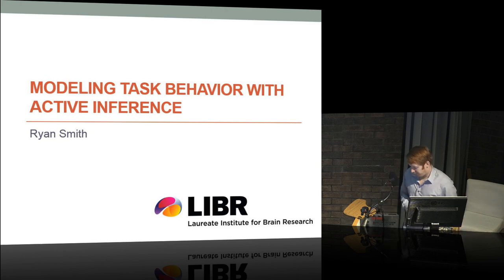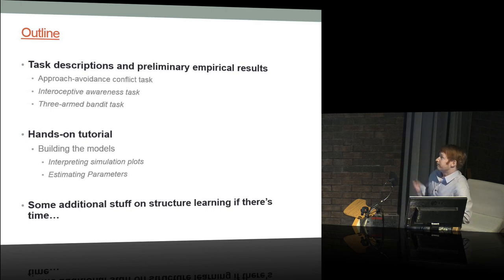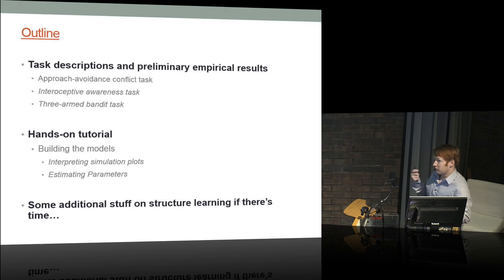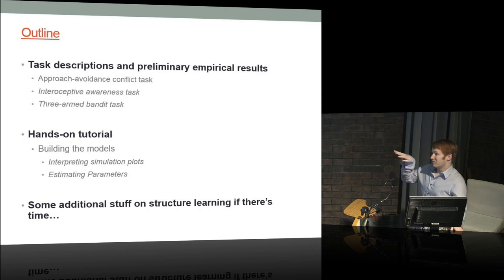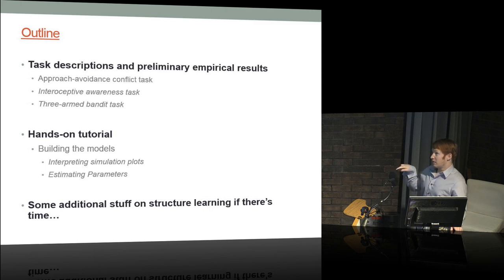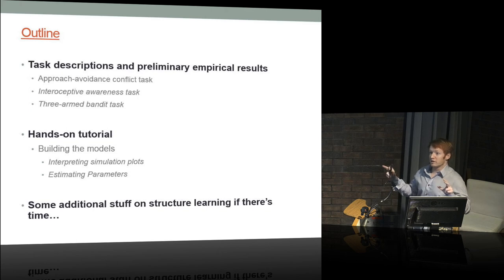The general outline: I'll give you some task descriptions and preliminary empirical results from fitting models to behavior from people who have done these tasks — healthy populations and a bunch of different clinical populations. There are three tasks. There's an approach-avoidance conflict task, which is the one I'll spend most time building the model in detail, and the hope is that'll give you a thorough sense so the next tasks we can go through more briefly, and you can see how the general abstract structure is similar across specific models.